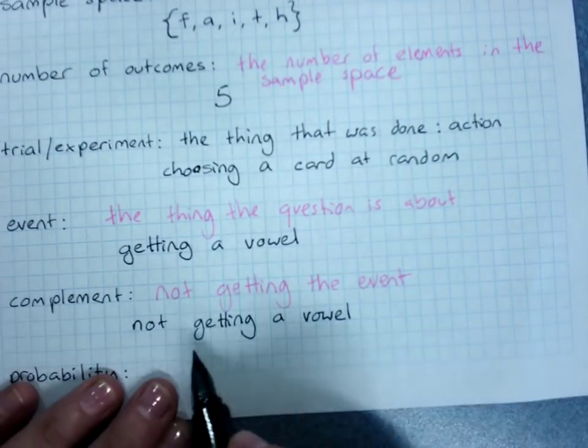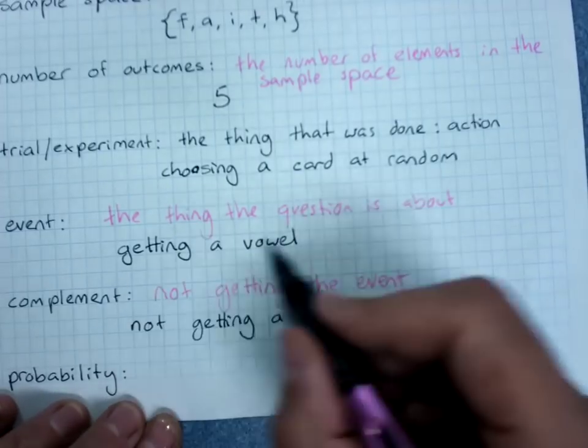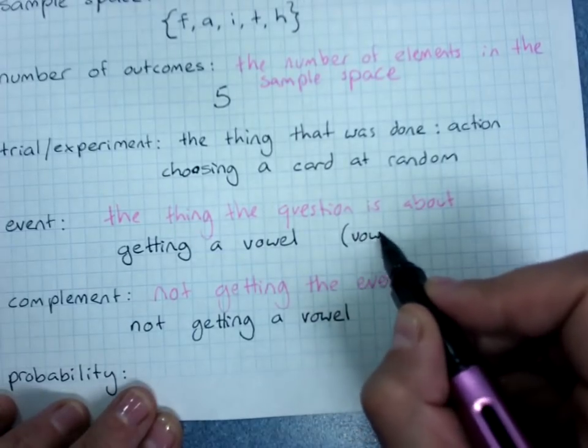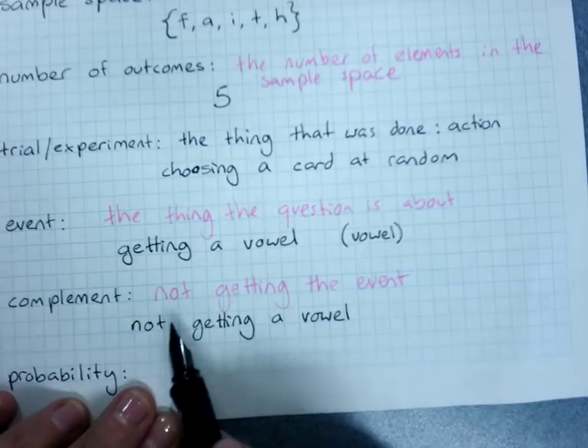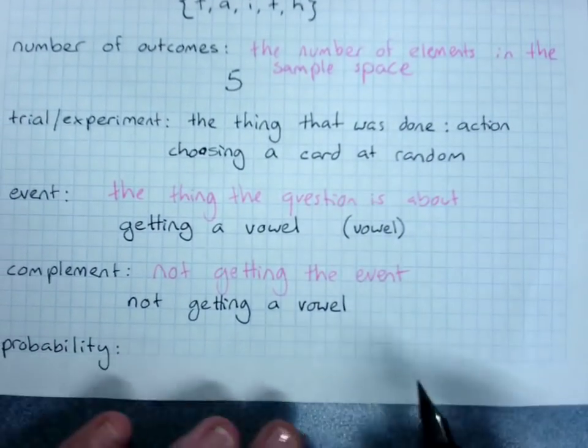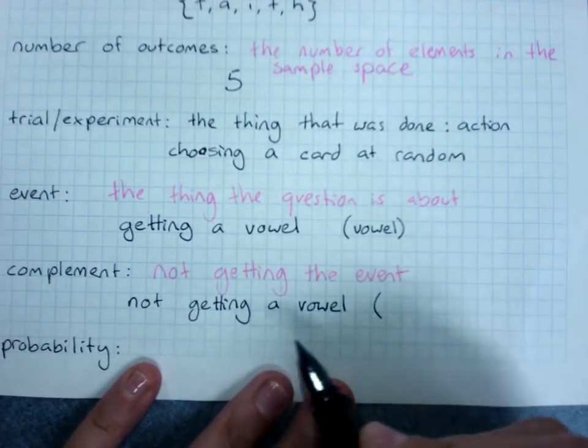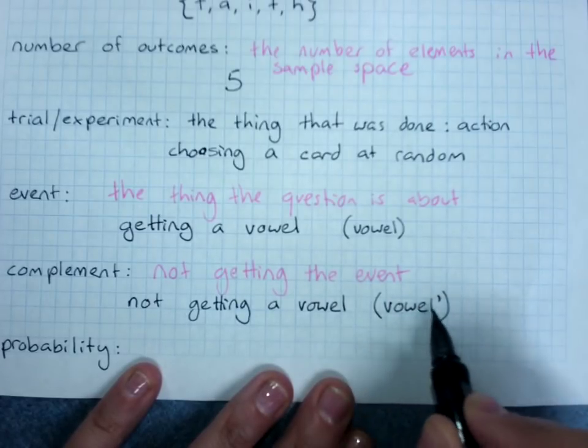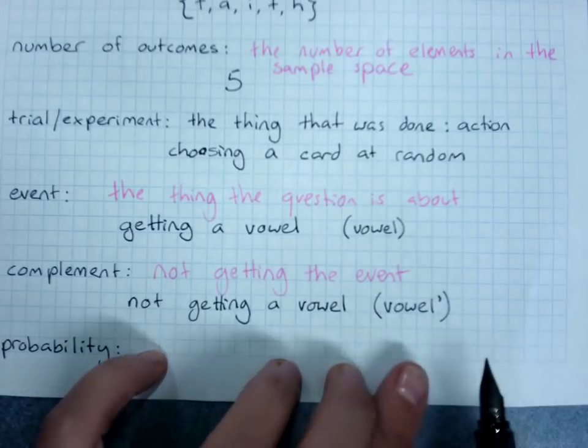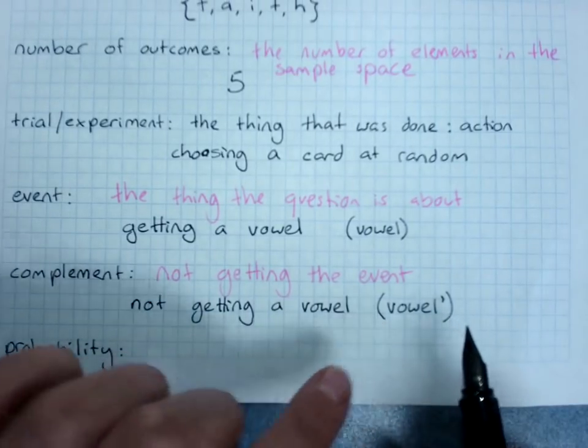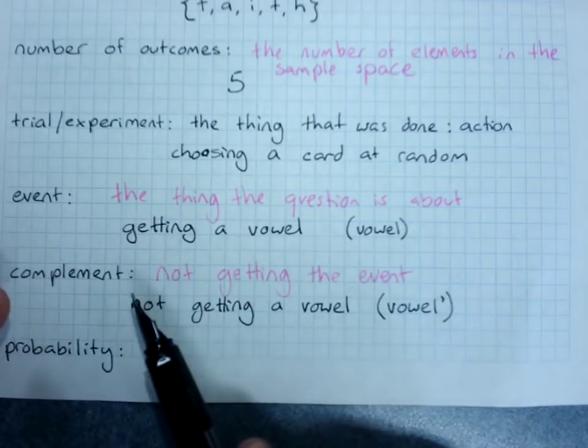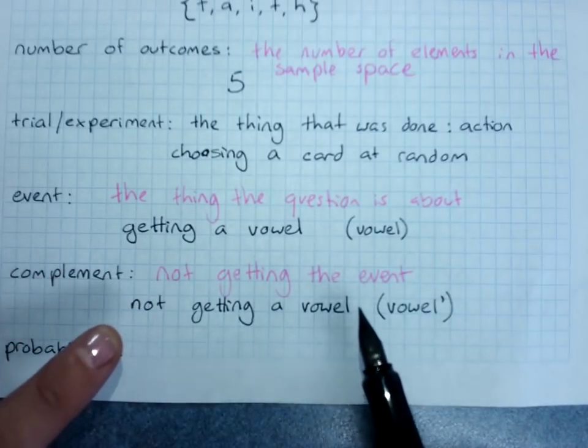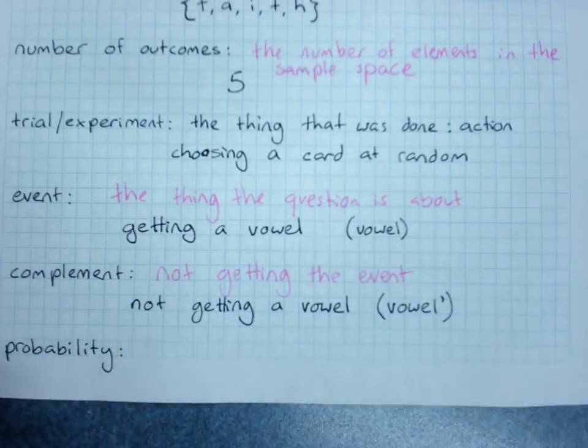Now sometimes you can write getting a vowel for event, or even just vowel, and you can call the complement not getting a vowel, or instead of not getting a vowel you can write vowel with a little apostrophe which says not a vowel. But that's a bit technical. So the event - getting a vowel - and the complement - not getting a vowel. We'll learn more about the complement later on, but we do need to know what complementary events are.